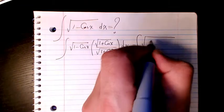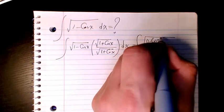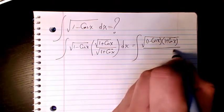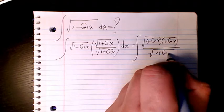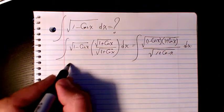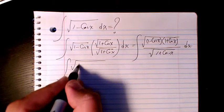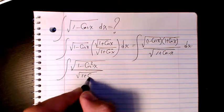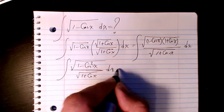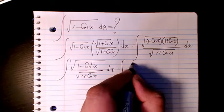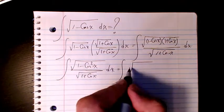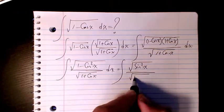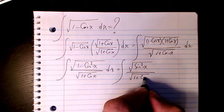In the numerator we will have one minus cosine x times one plus cosine x, divided by square root of one plus cosine x dx. This gives us the square root of one minus cosine squared x divided by square root of one plus cosine x. One minus cosine squared x is the same as sine squared x.